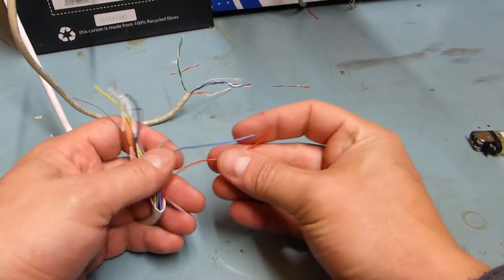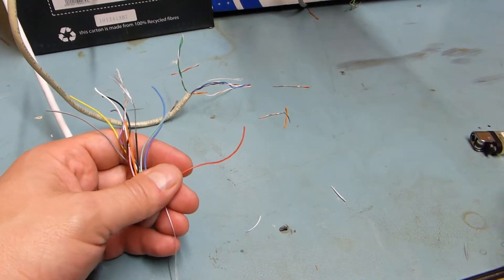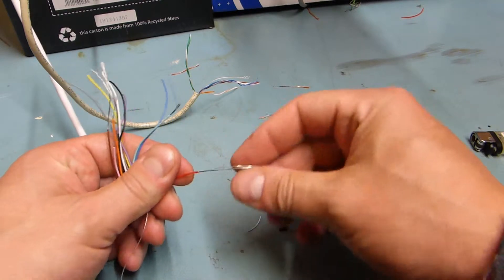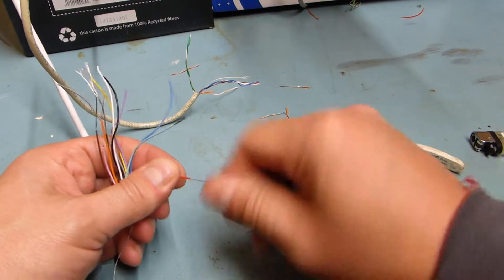Copper-coated aluminum is quite widespread. So this is a 12-core alarm cable. You can sort of tell that it's not right when you try to twist it. It won't twist properly.